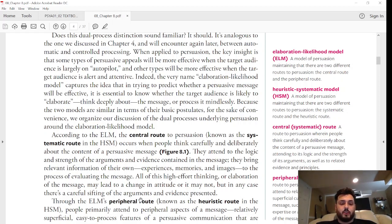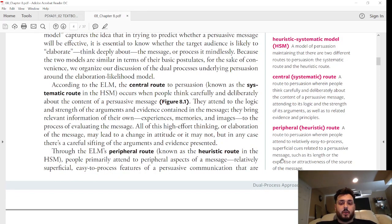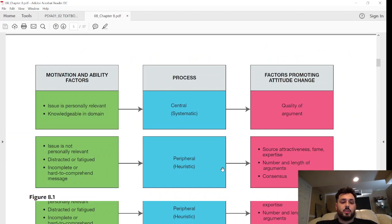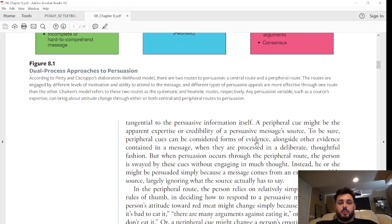Through ELM's peripheral route, which is also known as the heuristic route, people primarily attend to peripheral aspects of a message—relatively superficial, easy-to-process features of a persuasive communication, information that are basically tangential to the persuasive information itself.